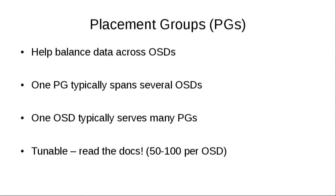Placement groups you don't talk to directly, but you care how many of them there are because they're effectively hash buckets that help balance data across all the OSDs. It's too computationally intensive to maintain a mapping between every object and every OSD it might be on, so you look up the object in the placement group, and the placement group tells you which OSDs it's on. Typically one placement group will span several OSDs, and one OSD serves many placement groups. You want 50 to 100 per OSD — you can always increase this but you can't decrease it, so it's probably better to start with less.